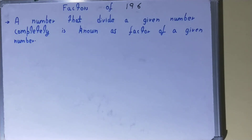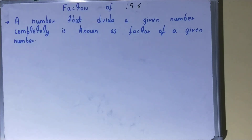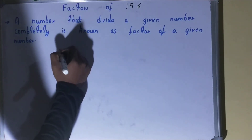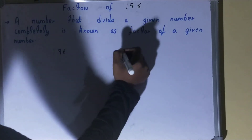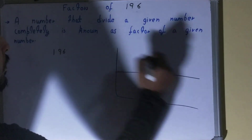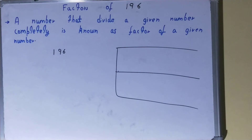Hello friends, in this video I'll be helping with the factors of the number 196. To find them out, you need to write the number like this and draw a factor list. Once you are done with that, you need to start with the lowest natural number, which is one.